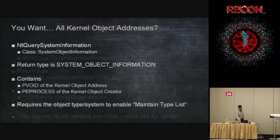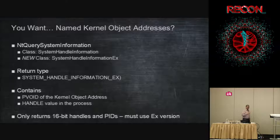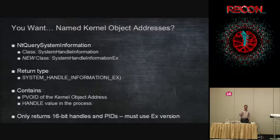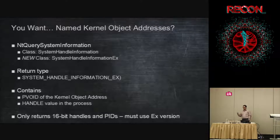On the other hand, if those objects are named and applications have handles to them, there's another API — another class — that dumps all the handles. This class gives you every single handle in every process, including the kernel process, and tells you not only the handle inside that process but also the pointer to the object. So any thread objects, process objects, file objects, registry keys, events, mutexes, semaphores — if anyone has a handle to any of them, you get their pointer and the handle ID as well.